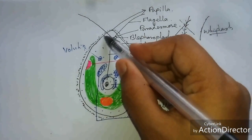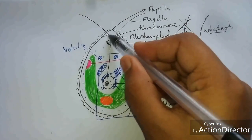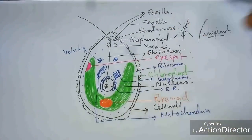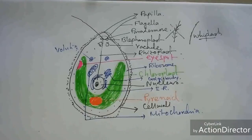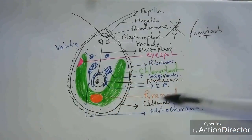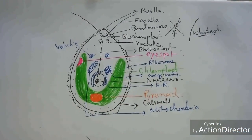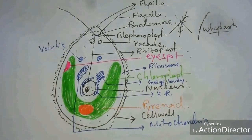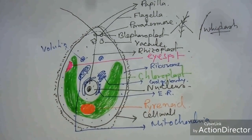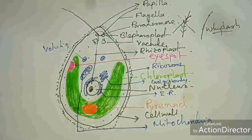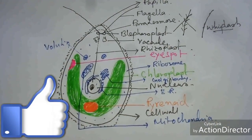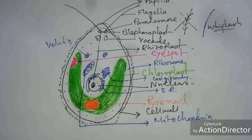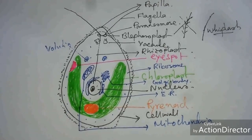This is the structure of Chlamydomonas algae, and here is the papilla. This is the complete structure of Chlamydomonas algae. If you like this video, please press the like button and share it. Thank you for watching.